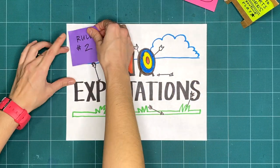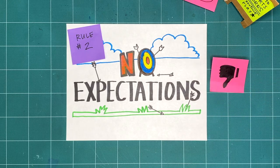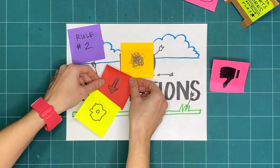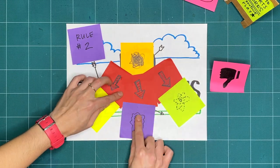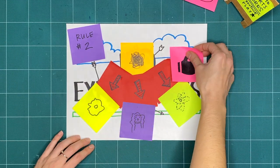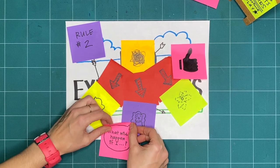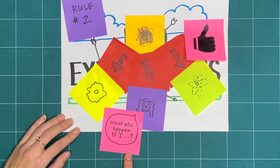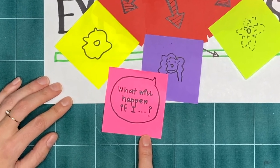Rule 2 is no expectations. If we're not expecting something to turn out good or bad, we're open to it going in a whole bunch of different ways. And that means that all respectful creative explorations are great, regardless of what it ends up looking like. Try to do things you've never tried before and ask yourself, what will happen if I...